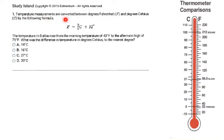Temperature measurements are converted between degrees Fahrenheit and degrees Celsius by the following formula. In this problem they give us Fahrenheit, or F equals nine-fifths C (that's Celsius) plus 32. The temperature in Dallas rose from the morning temperature of 43 degrees Fahrenheit to the afternoon high of 71 degrees Fahrenheit. What was the difference in temperature in degrees Celsius to the nearest degree? Now you're going to have to watch out. This problem they're trying to get you.